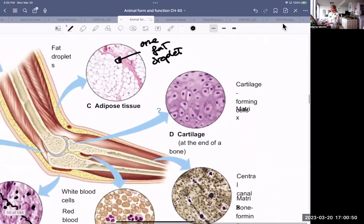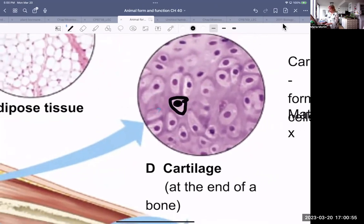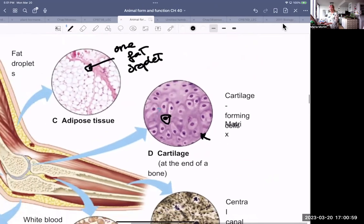Cartilage is another kind of connective tissue. These are lacunae with cells inside. And they form cartilage, like you would find at the end of a bone.